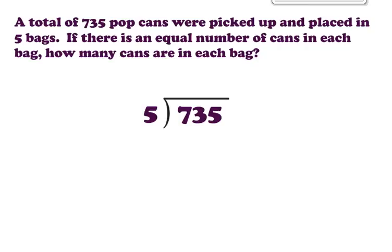A total of 735 pop cans were picked up and placed in 5 bags. If there's an equal number of cans in each bag, how many cans are in each bag? So we're looking at 735 divided by 5. This time we're going to use short division instead of long division, doing the subtracting mentally.